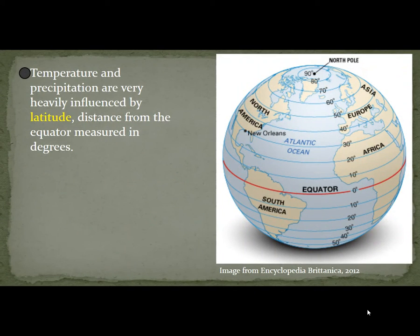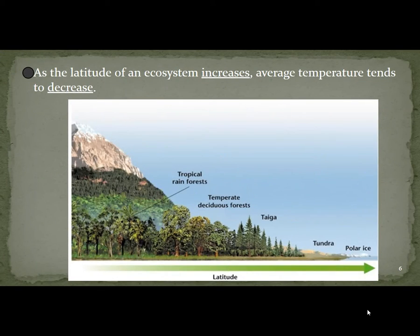Temperature and precipitation are very heavily influenced by latitude — that's the distance from the equator, either north or south, measured in degrees. As the latitude of an ecosystem increases, the average temperature tends to decrease.